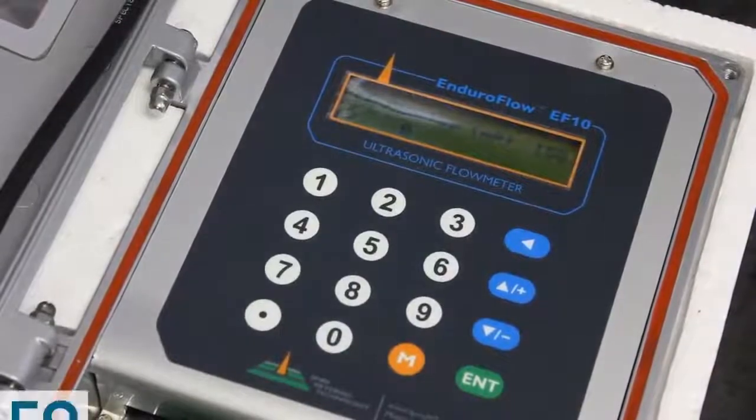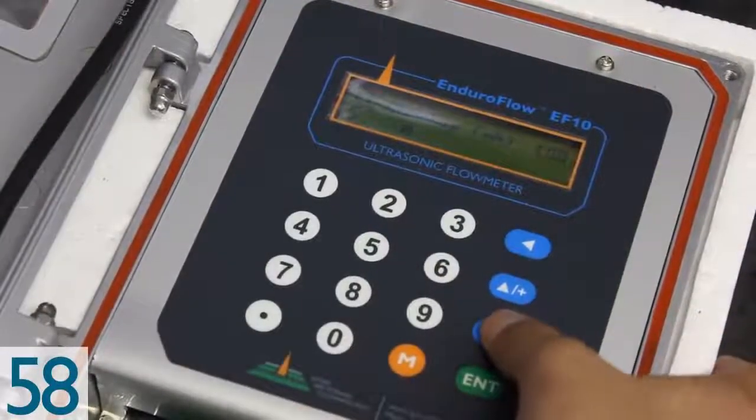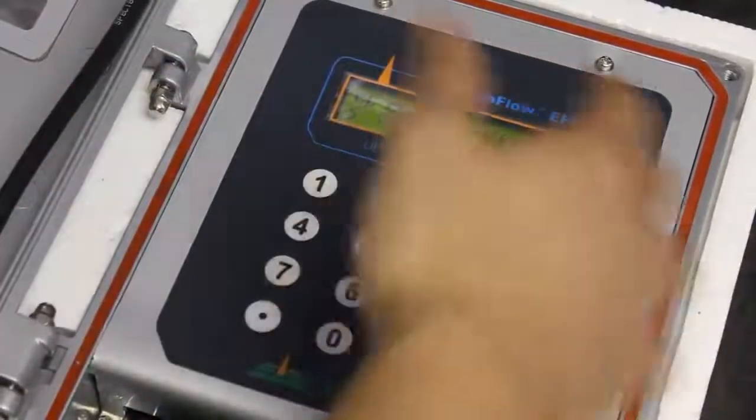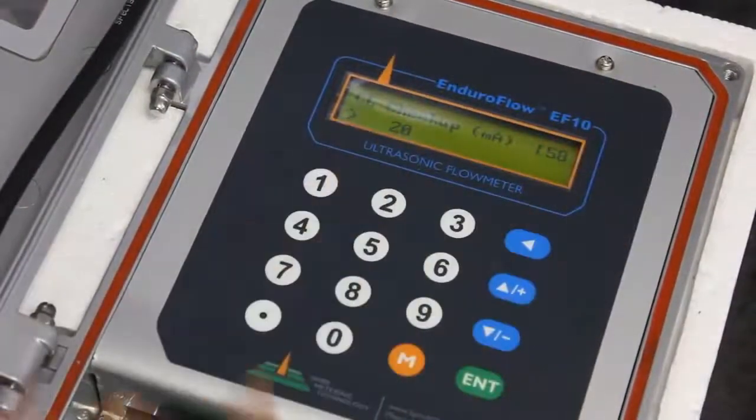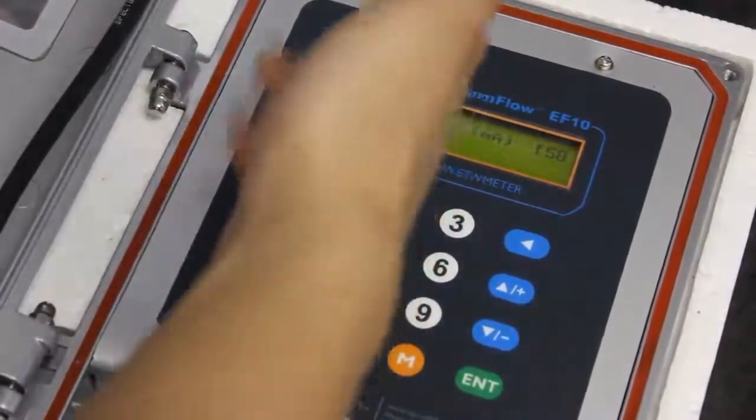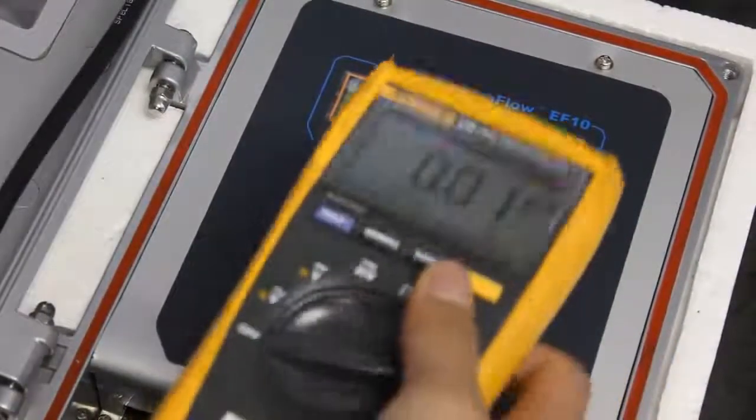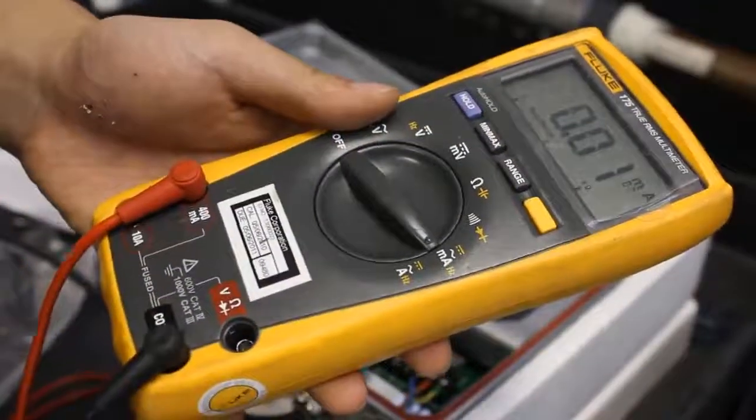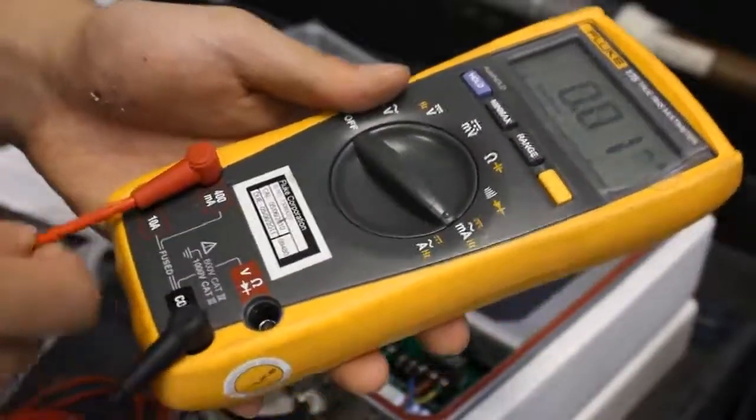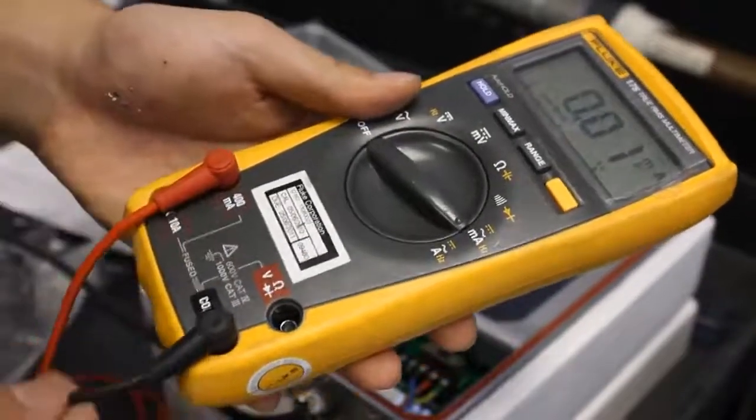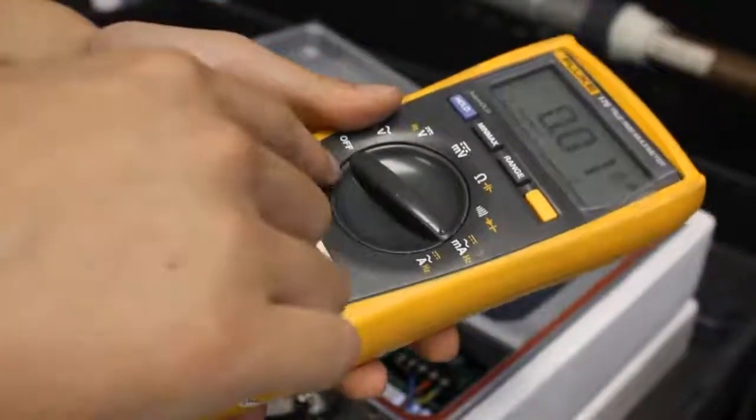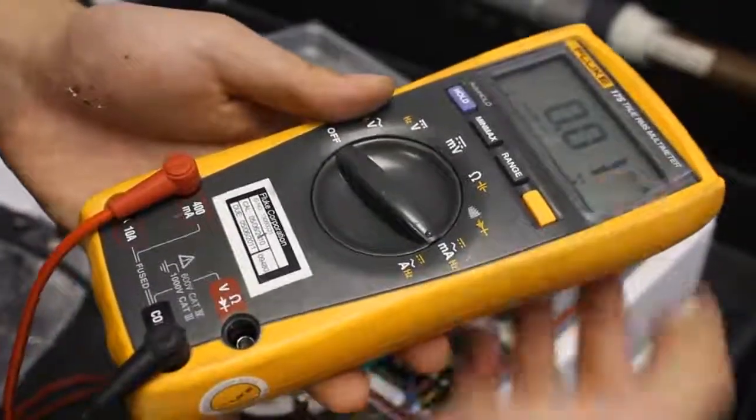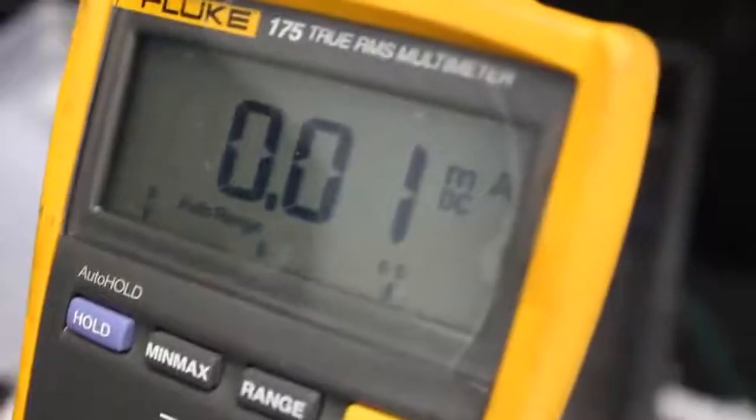To set up your multimeter, make sure the red lead is plugged into the milliamp, the black lead is plugged into the comm. Make sure your dial is dialed to milliamp. And make sure the mode that you have here is milliamp DC.